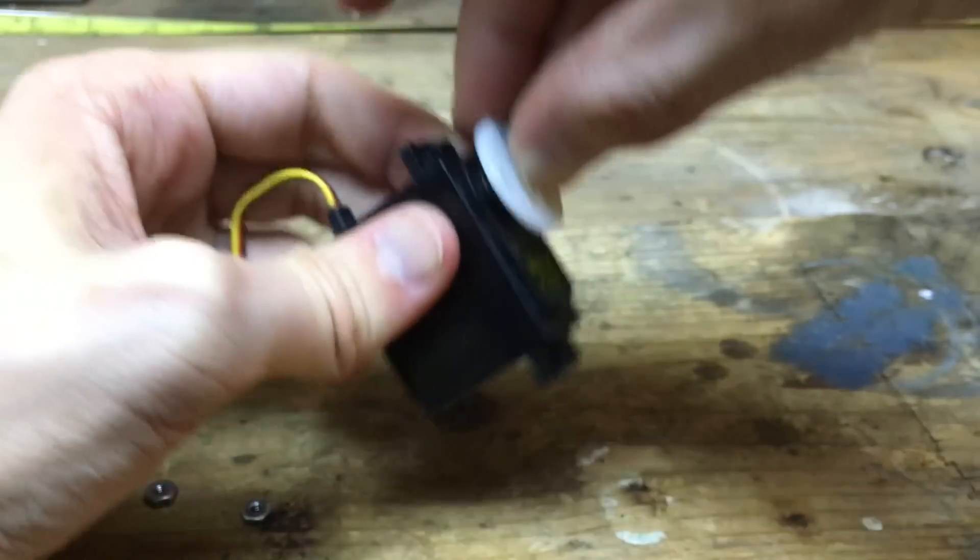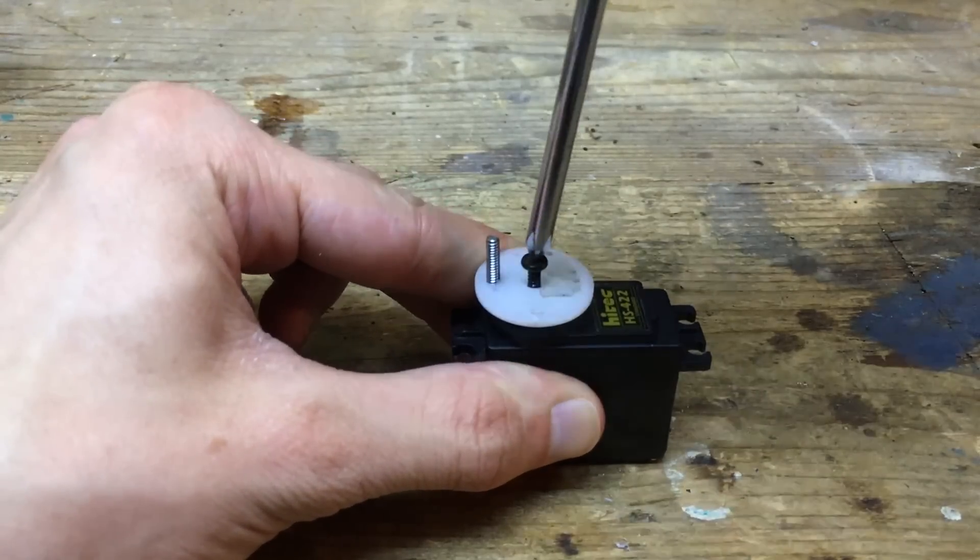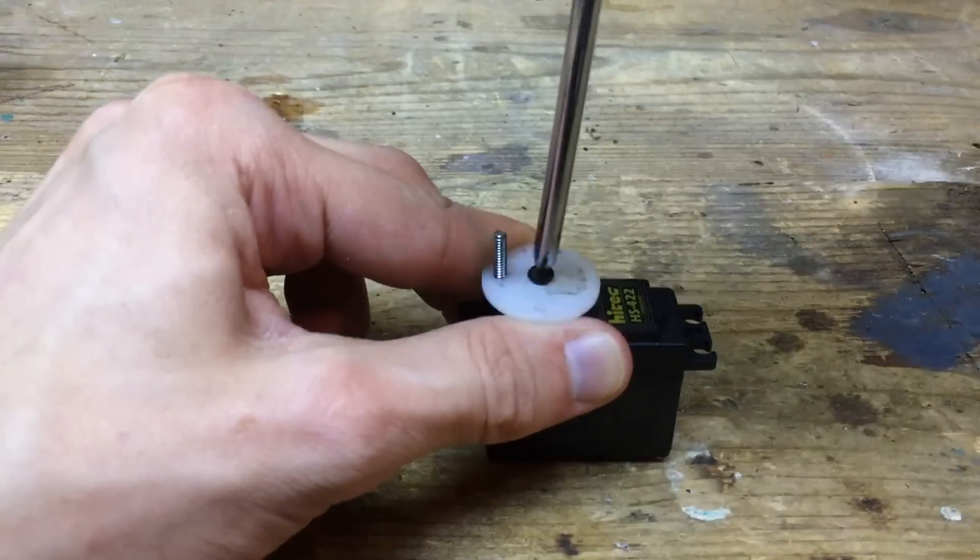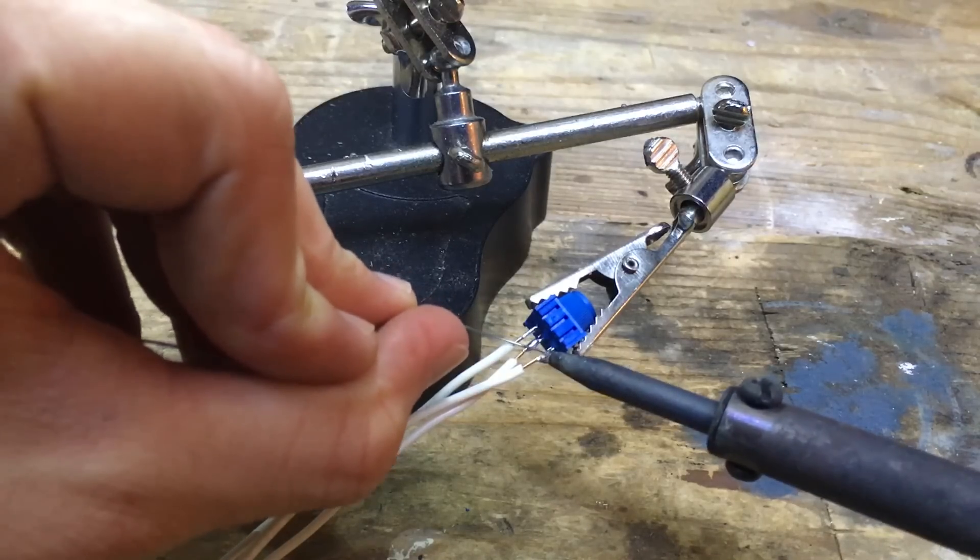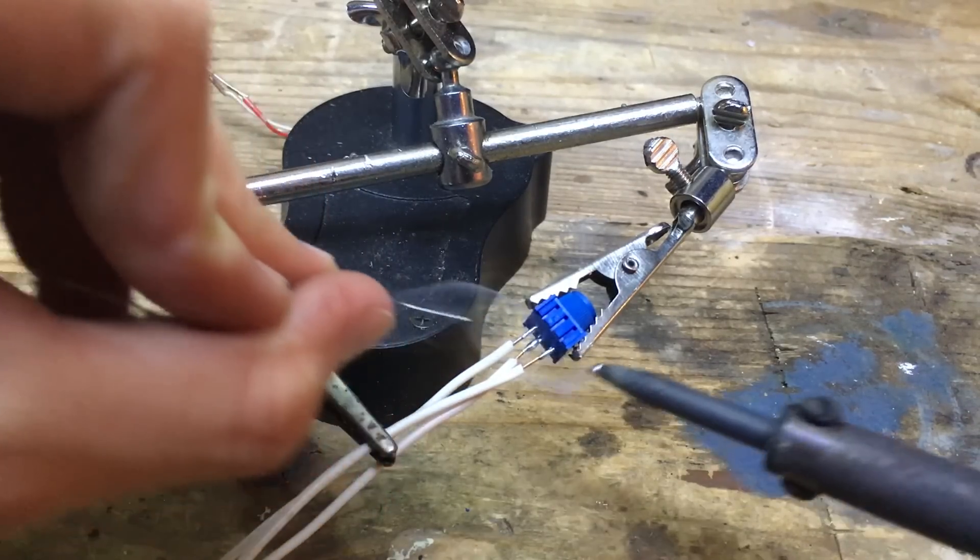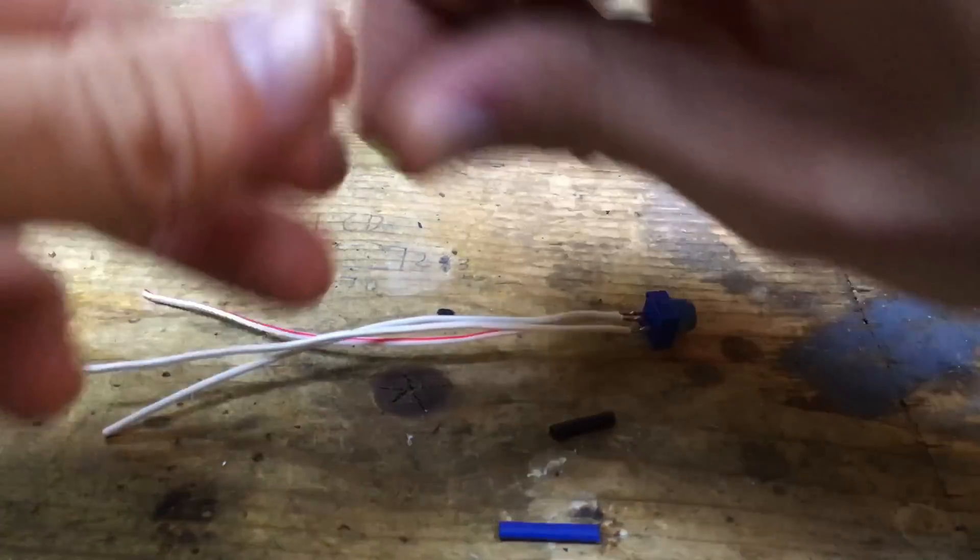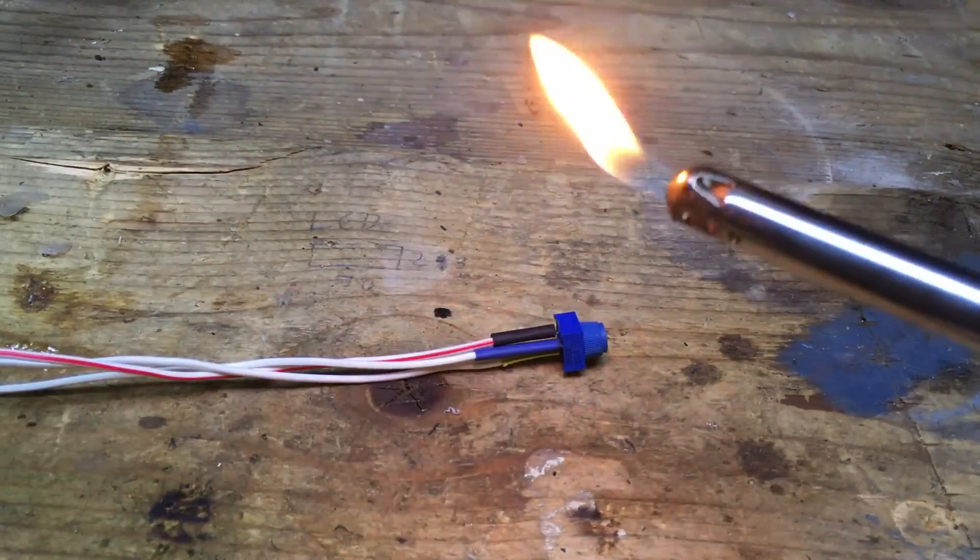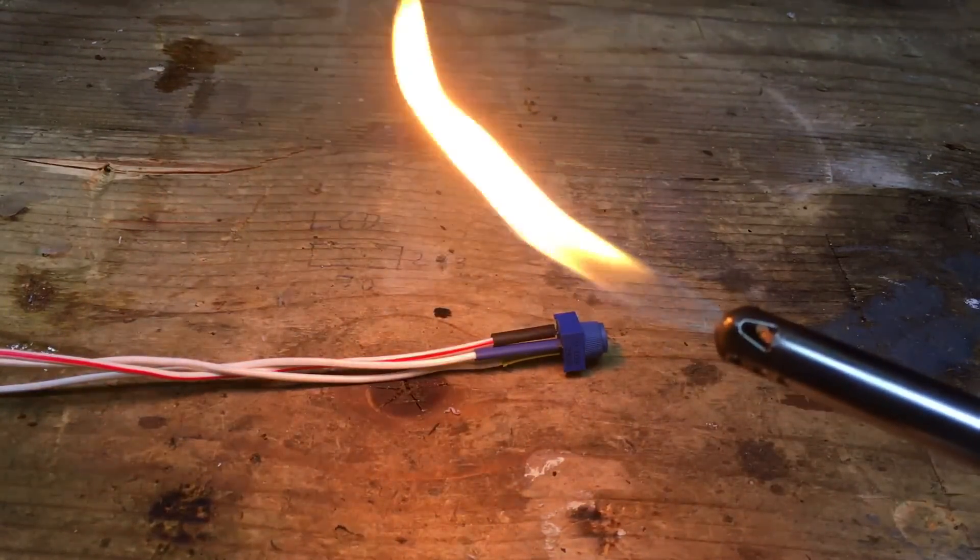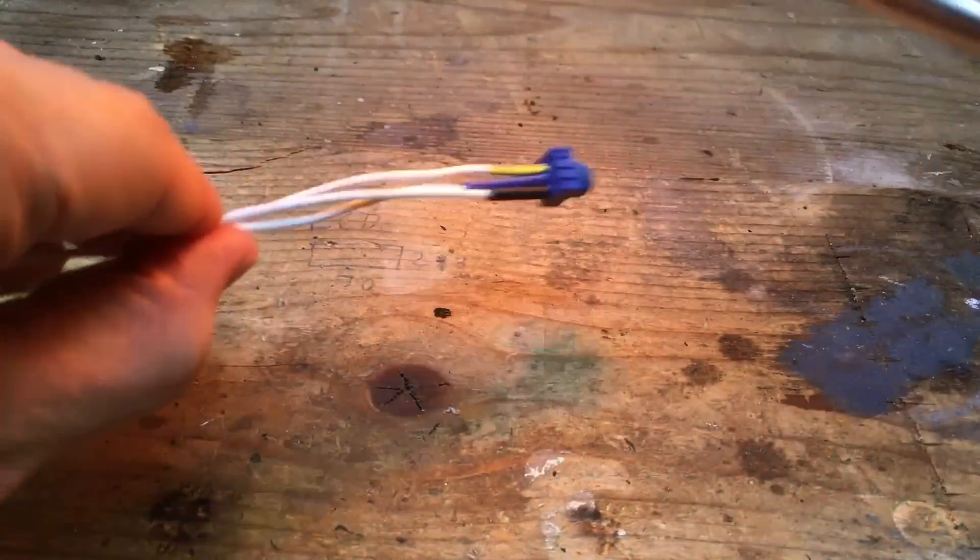Instead I'm going to use an Arduino. And in keeping with our theme here, I'm using completely mismatched colors of heat shrink tubing. Someone say heat gun? I don't have time for that, I'm using my modified flamethrower barbecue lighter.